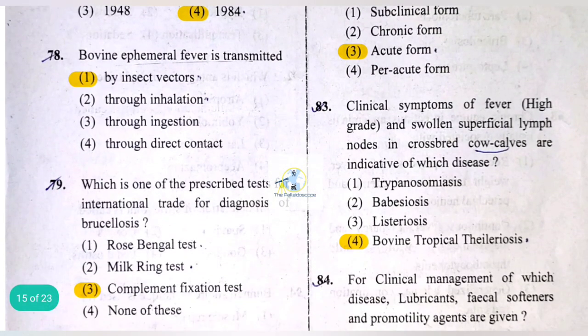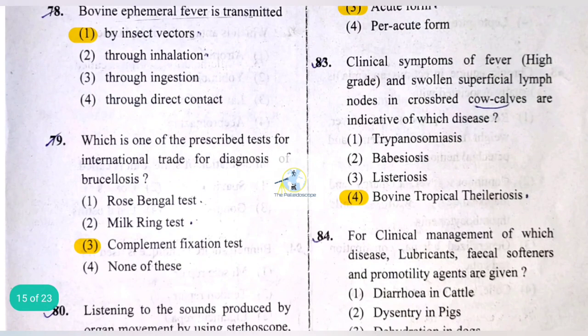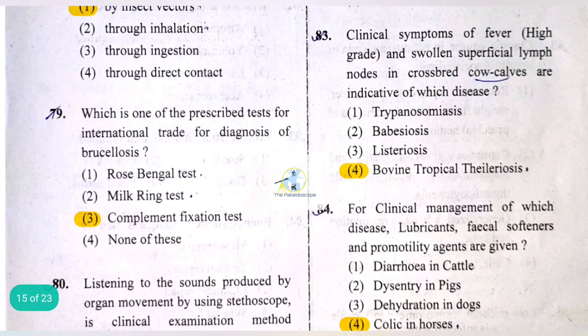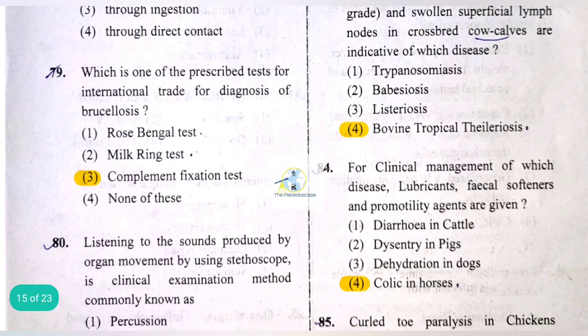Clinical symptoms of high-grade fever and swollen superficial lymph nodes in crossbred cow calves are indicative of bovine tropical theileriosis.